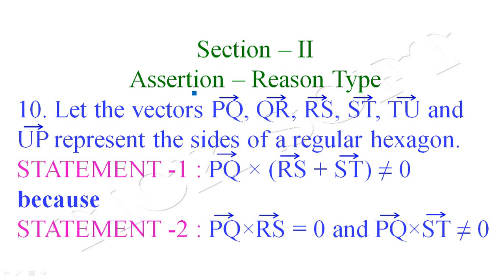In Section 2 we have an assertion-reason type of question. The question is: let the vectors PQ, QR, RS, ST, TU, and UP represent the sides of a regular hexagon. So there is a regular hexagon and these vectors represent the sides of that regular hexagon.